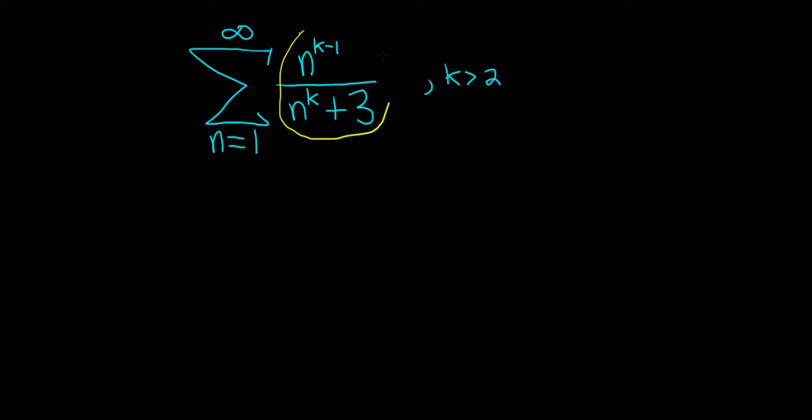There is your a sub n, which is this piece here. This is what's given in the problem. And then b sub n is something that has the same growth rate.